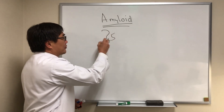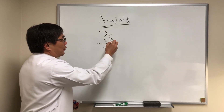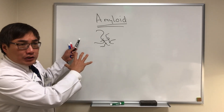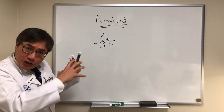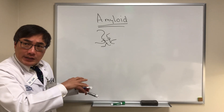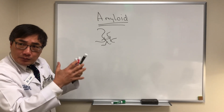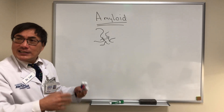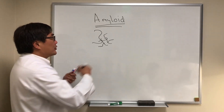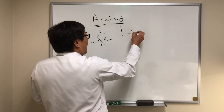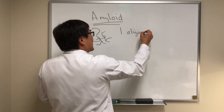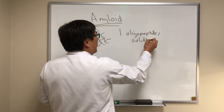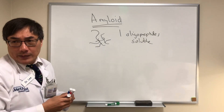Under normal conditions, proteins assume certain folding patterns that allow them to do their job. This post-translational conformational change is intrinsic to the shape and configuration of the protein. When the protein is digested and broken down into little pieces by proteinases, those are normally recycled. Those oligomers — little tiny pieces, oligopeptides — are normally soluble and can move around and then be recycled or made into other stuff.